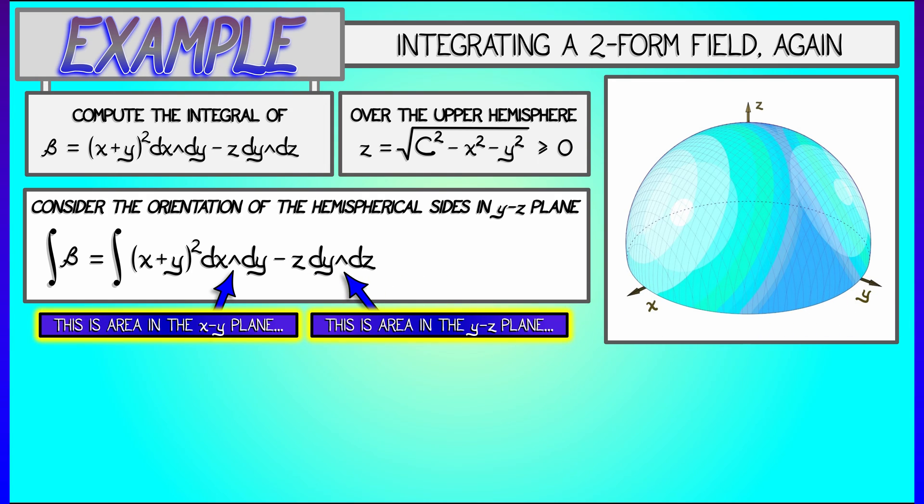But that second term, dy wedge dz, that is oriented projected area in the yz plane. Now, look at that hemisphere. Think about it.